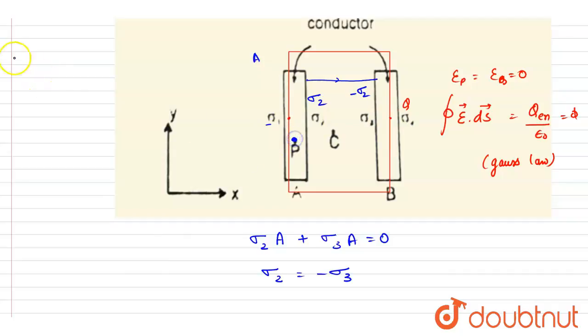it is q₁/(2ε₀). We are calculating in a direction, let's say towards right. These are equal and opposite charges. Because of q₄ it will be towards left, so we'll write down